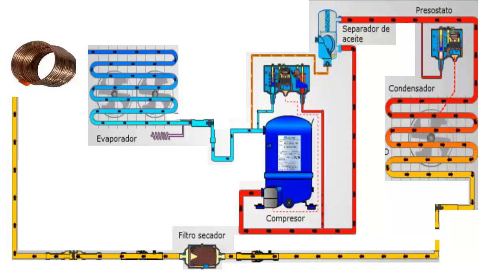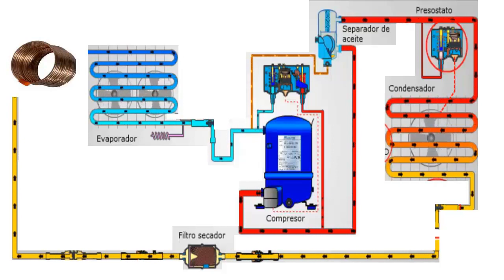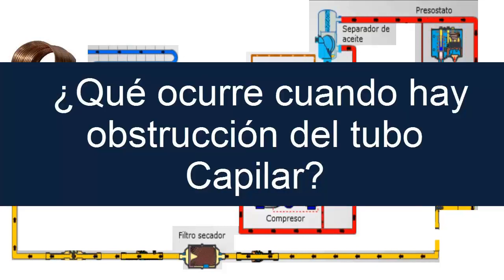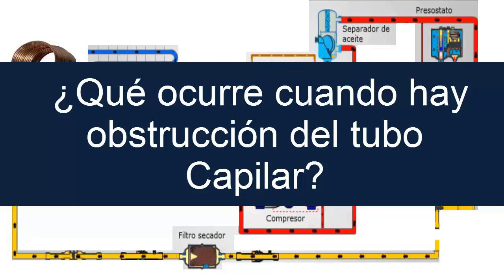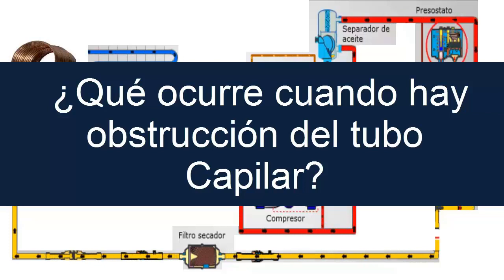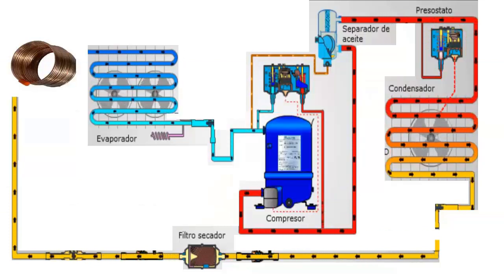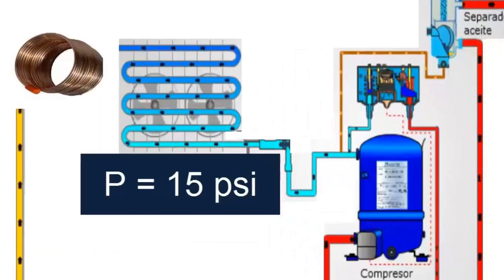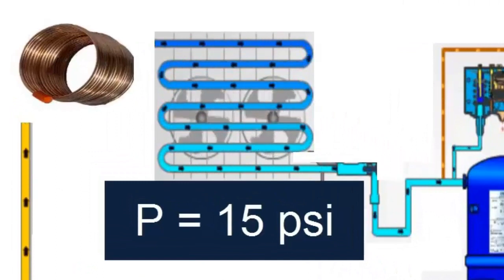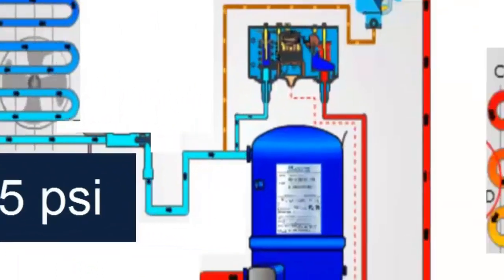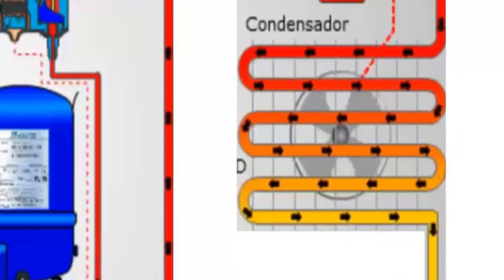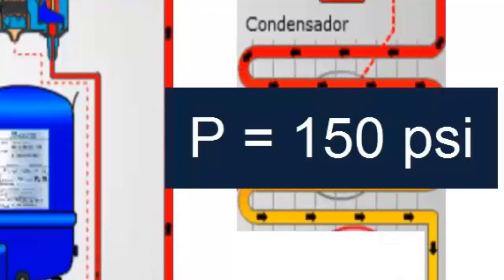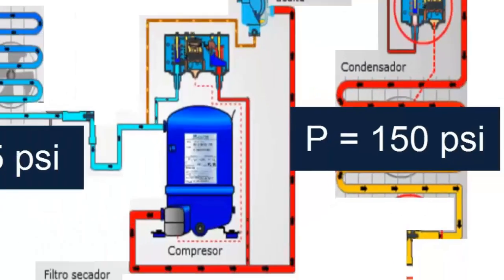On the screen, we have a cooling circuit that we are going to use to explain what happens in a cycle. The obstruction of the capillary tube begins. At this time, the system works normally. In the evaporator, we are going to have a pressure of 15 psi, and in the condenser, we have a pressure of 150 psi. Now the partial obstruction of the capillary tube begins to occur.